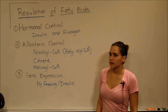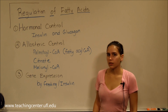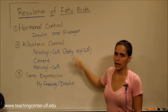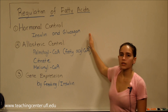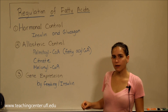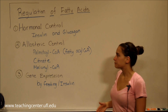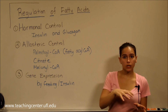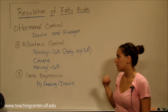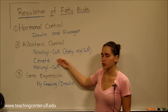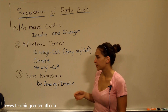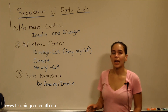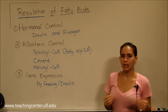Today we're going to be talking about regulation of fatty acid metabolism. The three main topics are hormonal control, allosteric control, and gene expression. In hormonal control, we'll discuss how insulin and glucagon affect enzyme activity. In allosteric control, we'll cover palmitoyl-CoA, fatty acyl-CoA, citrate, and malonyl-CoA. For gene expression, we'll discuss how feeding and insulin affect the rate of expression of these enzymes.